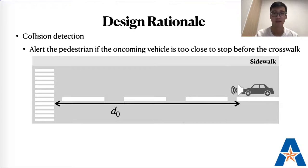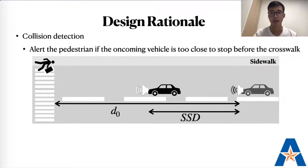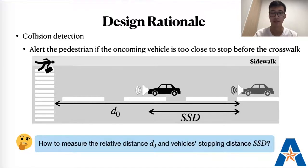Acoustic consists of speakers that are mounted on the front of the vehicle to emit ultrasonic chirps, and an app running on the pedestrian's smartphone for signal analysis. Whenever a pedestrian senses a clear street and tends to proceed to the crosswalk, she turns on the app to double-confirm her judgment. The app analyzes the received chirps to detect if an oncoming vehicle is too close to stop before the crosswalk. If yes, an alert is generated. The critical challenge here is how to measure the relative distance between the vehicle and crosswalk, as well as calculating the vehicle's stopping distance.